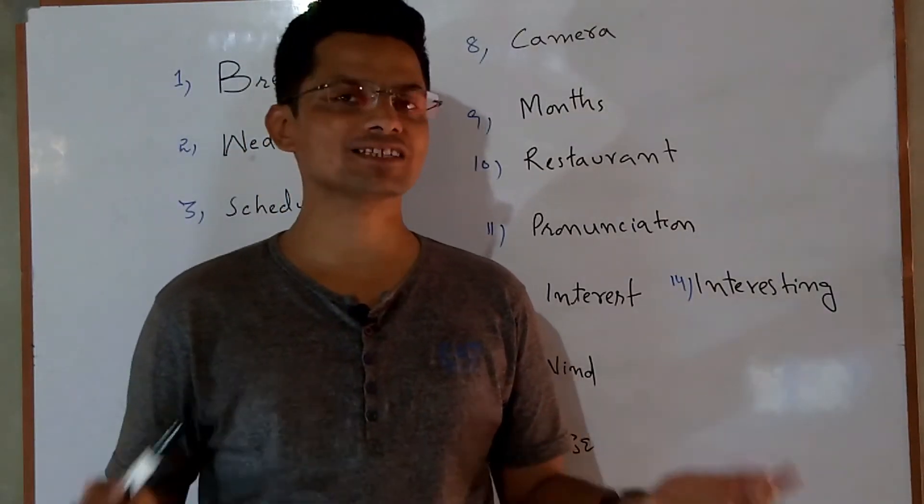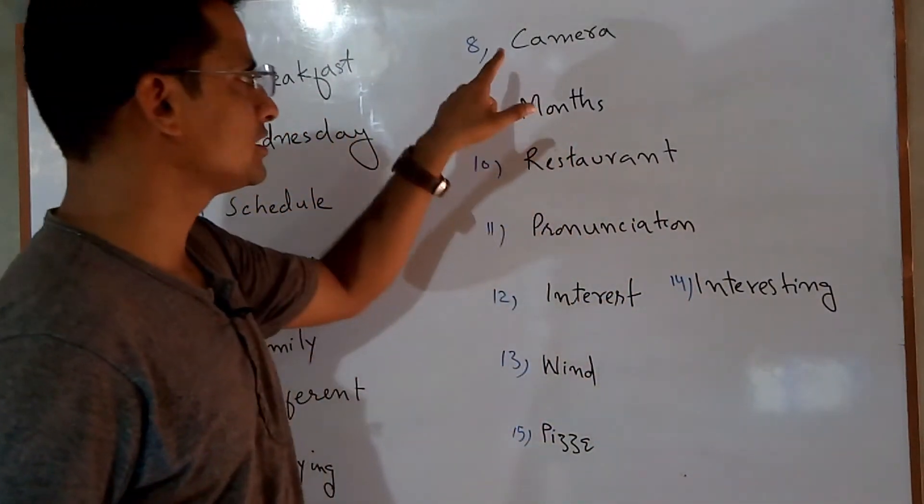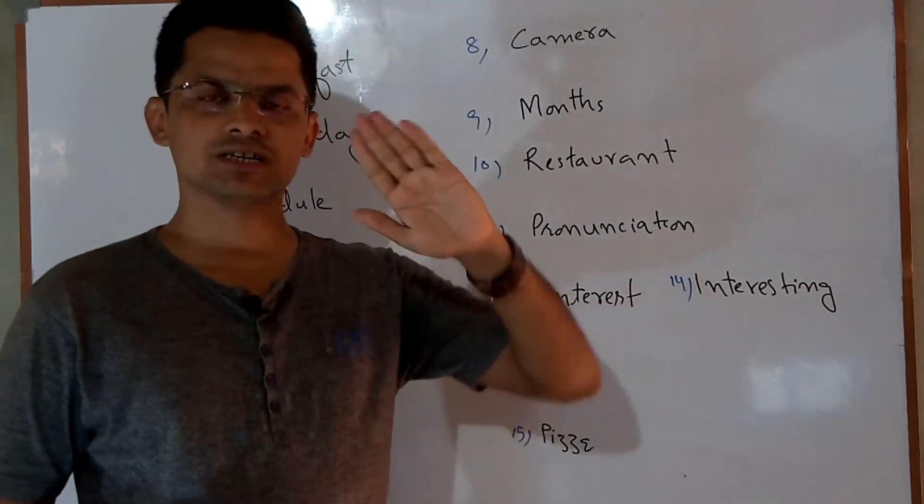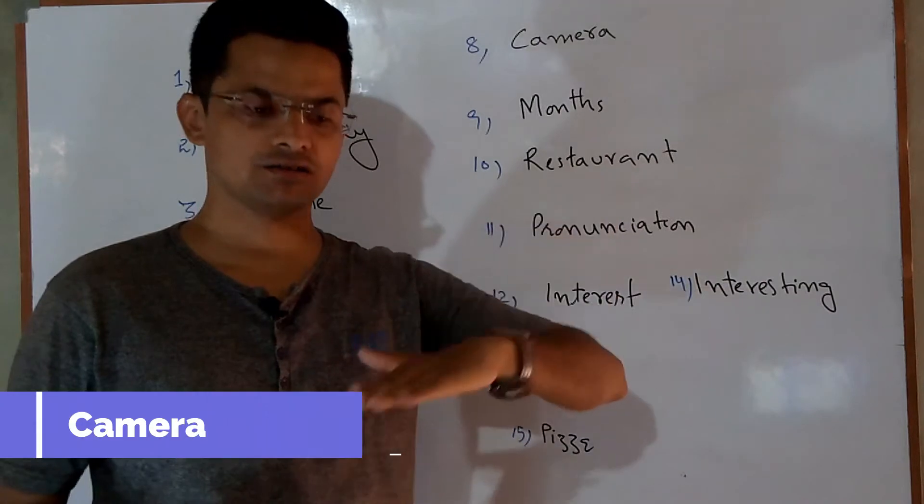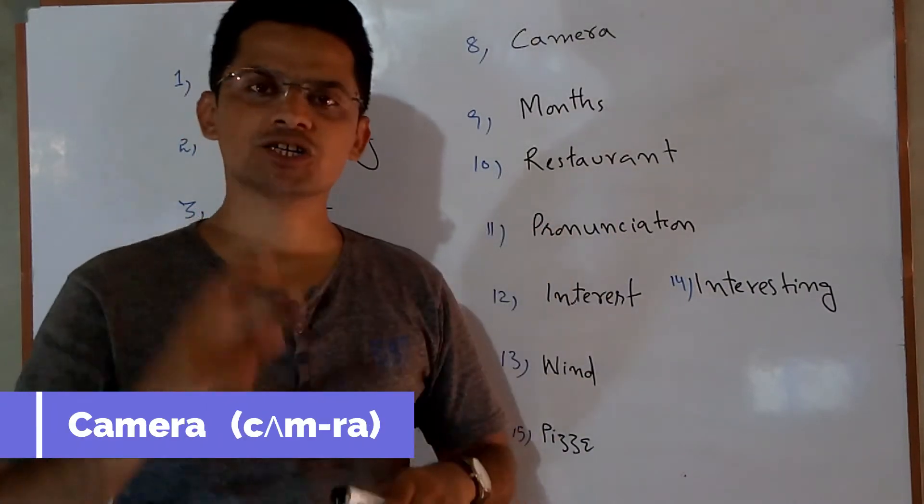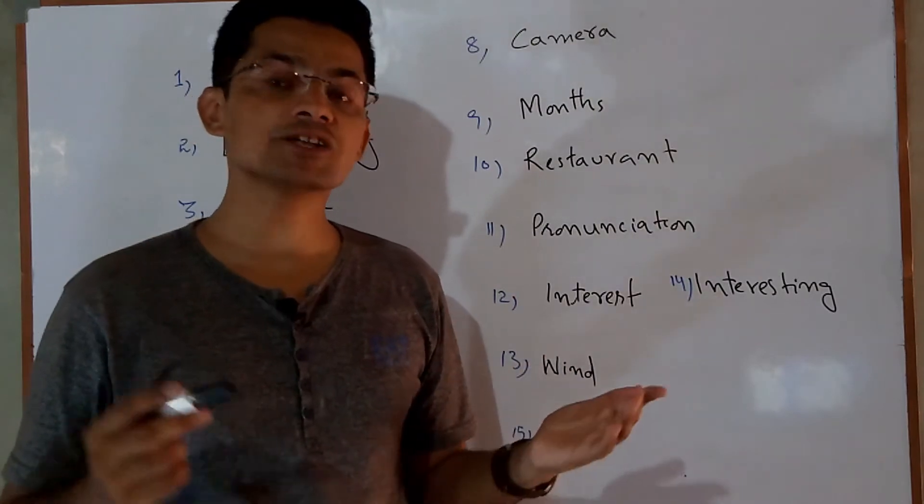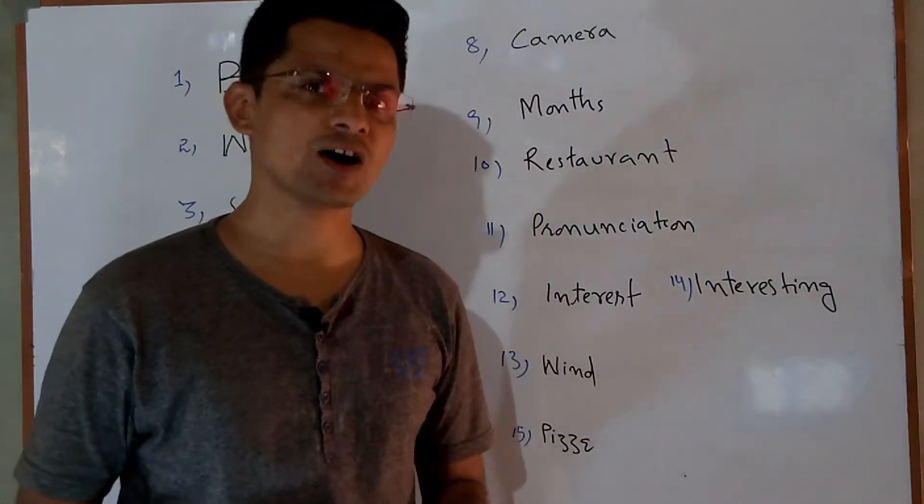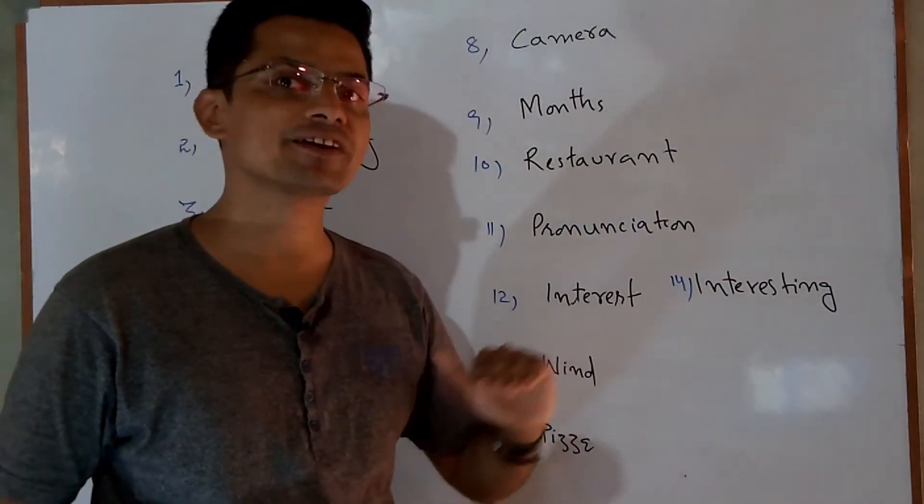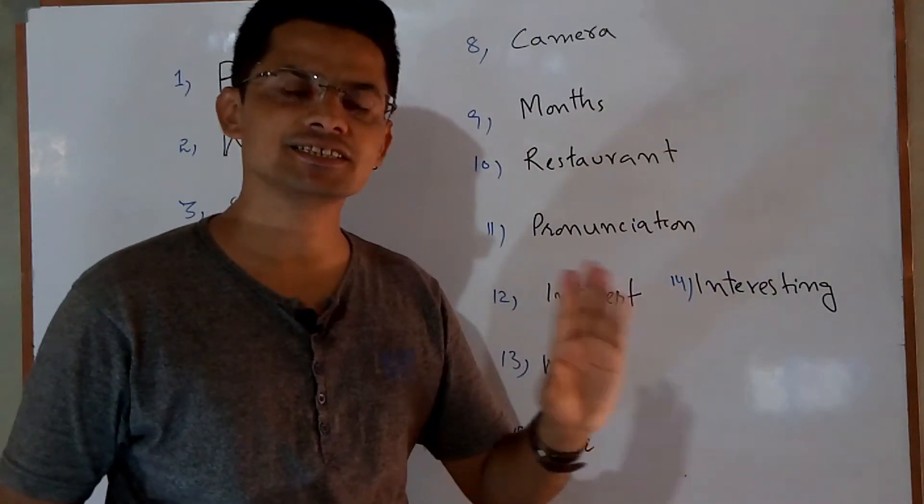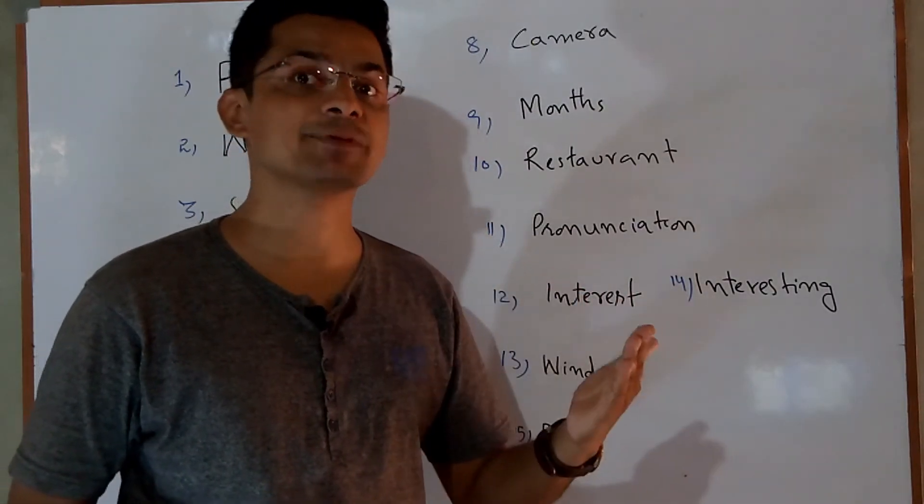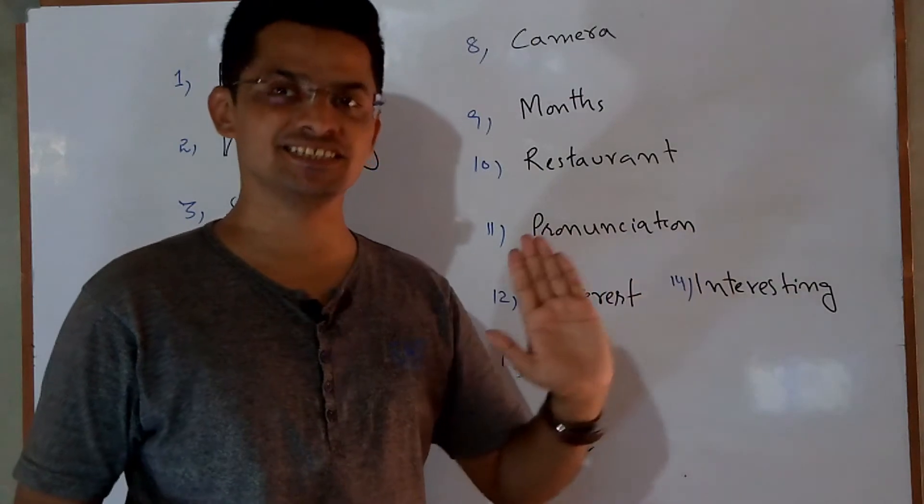The next word we are going to look at: Camera. Cam-ra, cam-ra. Two syllables. She got a new camera from Japan. Usne naya camera Japan se liya. Usne naya camera Japan se kharidi.